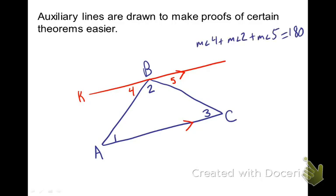Because this line was drawn, we can show that angle 4 plus angle 2 plus angle 5 equals 180, since line K has 180 degrees. We can also show that those alternate interior angles are congruent. Just by drawing that one line, we introduced a lot of concepts into the problem that weren't there before we drew the auxiliary line.